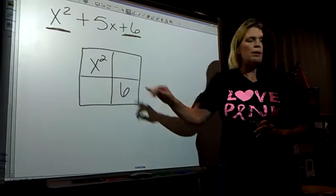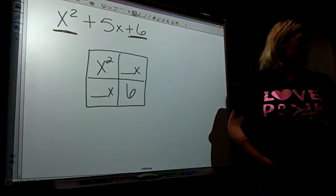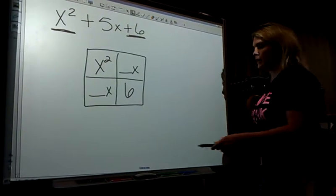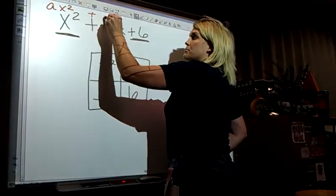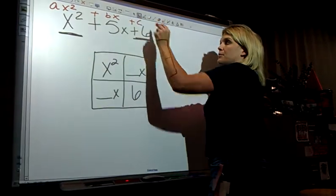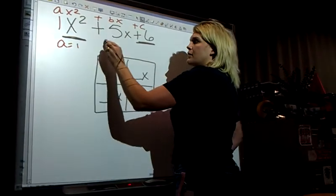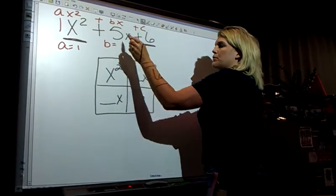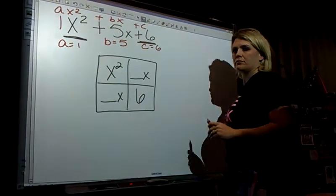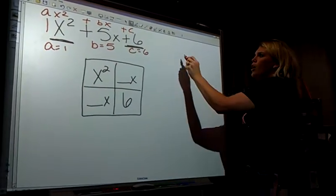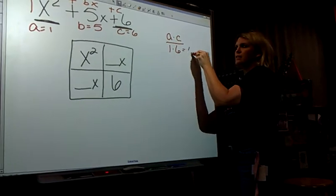In these two boxes, remember, we always have the x's, so it's something x, something x. We'll figure out what that is in just a minute. Now remember that quadratics, ax squared plus bx plus c. A is the number in front of x squared. If there's not a number, it's a 1. B is the number in front of x, which is 5. C is the number right here by itself. Always do a times c. 1 times 6 is 6.